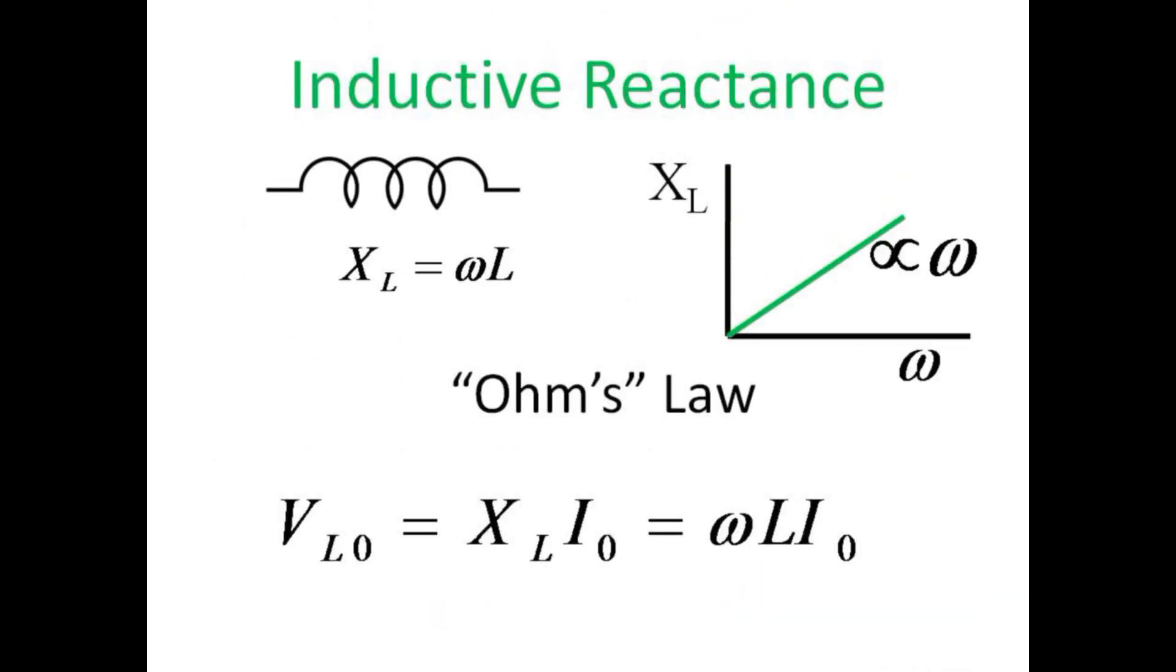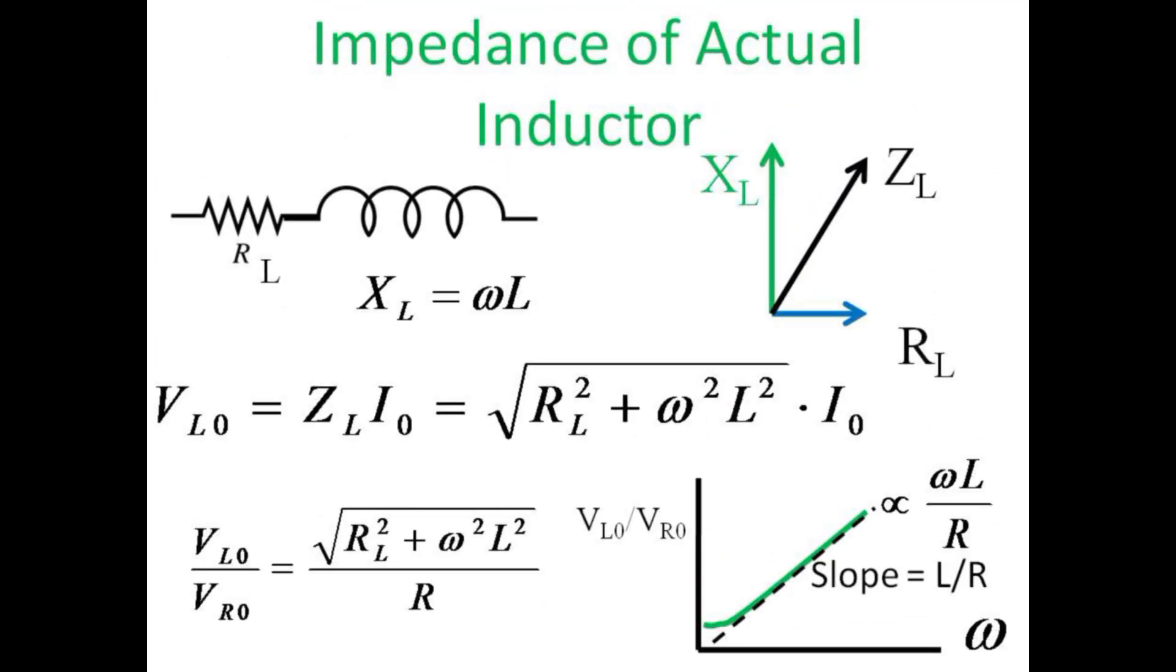At high frequencies, there are rapid changes in the current, and the inductor responds with a large back EMF. Therefore, its reactance increases linearly with frequency, and we expect the voltage drop across the inductor to increase with frequency as well. Unfortunately, the actual inductor used in this circuit has its own internal resistance R_L, which must be combined, like a right-angle vector, with its inductive reactance to give a combination known as impedance, Z.